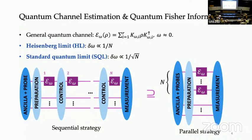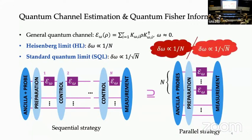A key question is: with these strategies and a large number of channel uses N, what is the scaling of the estimation error with respect to N? There are two types of limits. The first is the Heisenberg limit, where the estimation error is proportional to 1/N. The second is the standard quantum limit, where the estimation error is proportional to 1/sqrt(N). These are the only two scalings allowed when optimizing over all sequential or parallel strategies.